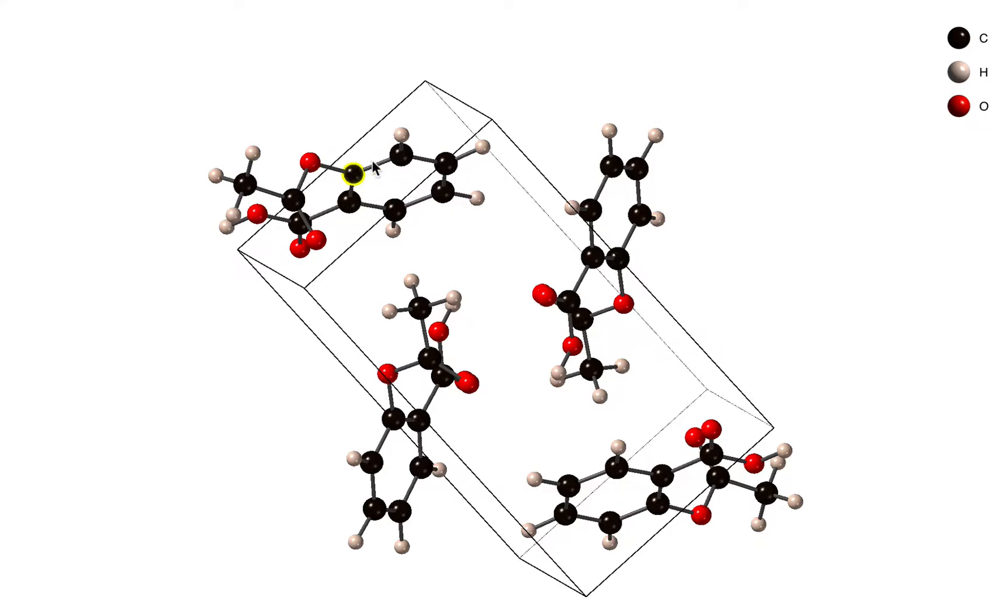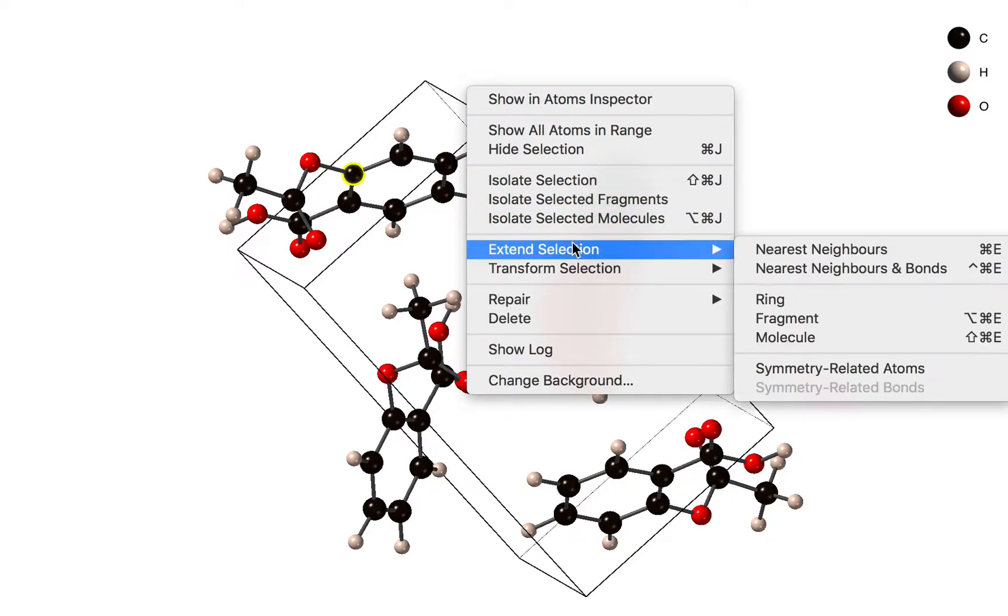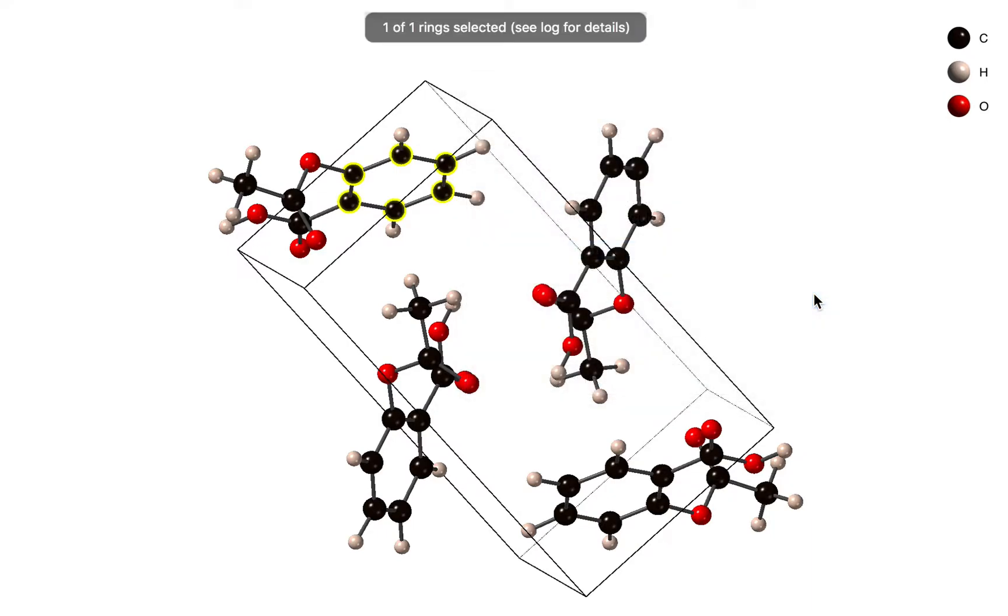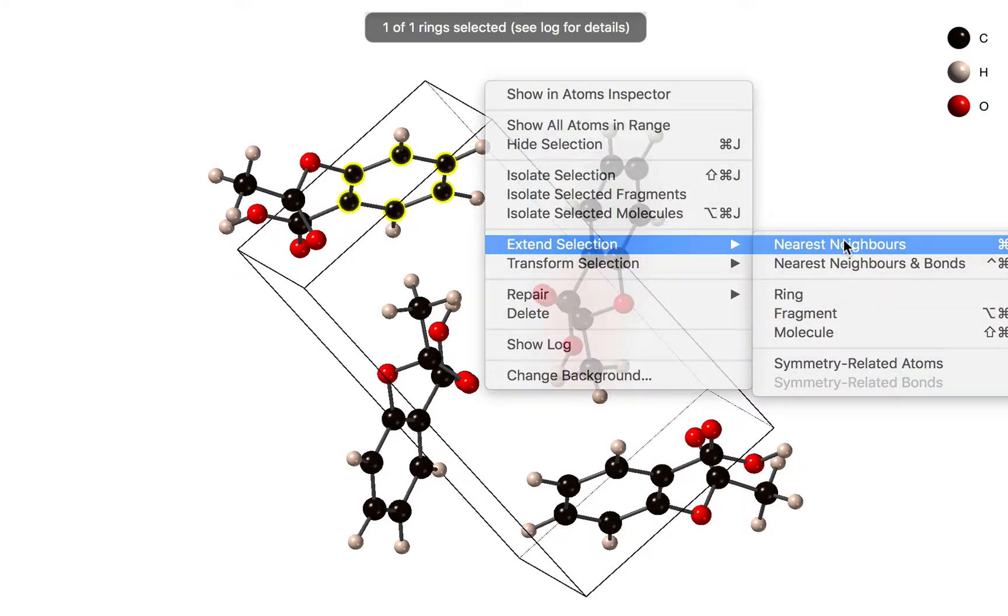So I'm going to measure the plane of the ring. I'm going to do the same thing as before. I'm going to select an atom and I'm going to extend the selection to the entire ring, and I'm actually going to extend the selection further to the nearest neighbors.